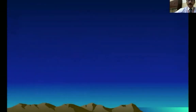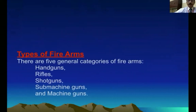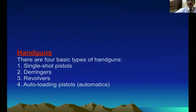Regarding the types of firearms, there are generally five types: handguns, rifles, shotguns, submachine guns, and machine guns. The handgun is further subdivided into single shot, Derringers, revolvers, and automatic pistols.